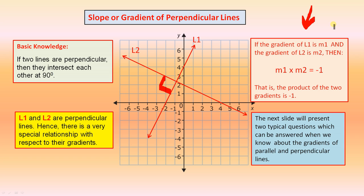If the gradient of L1 is m1, and the gradient of L2 is m2, then m1 × m2 = -1. That is, the product of the two gradients is -1.